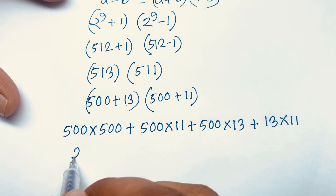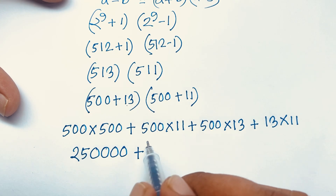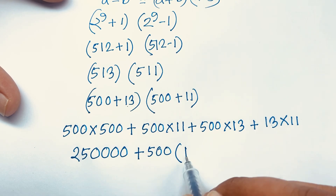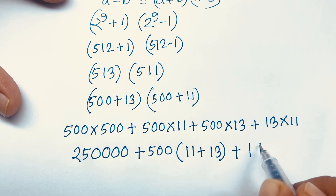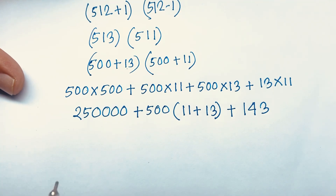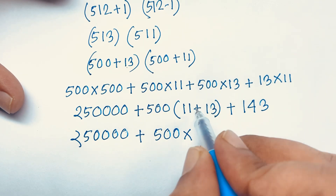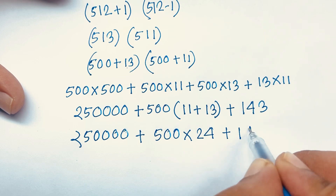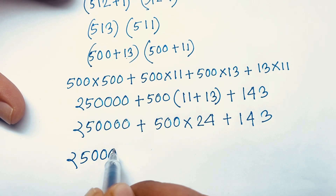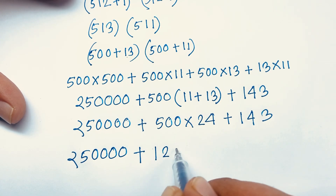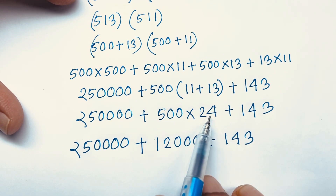500 times 500 equals 250,000. Then 500 is common in the middle terms: 500 times (11 + 13) equals 500 times 24, which equals 12,000. And 13 times 11 equals 143. So we have 250,000 plus 12,000 plus 143.